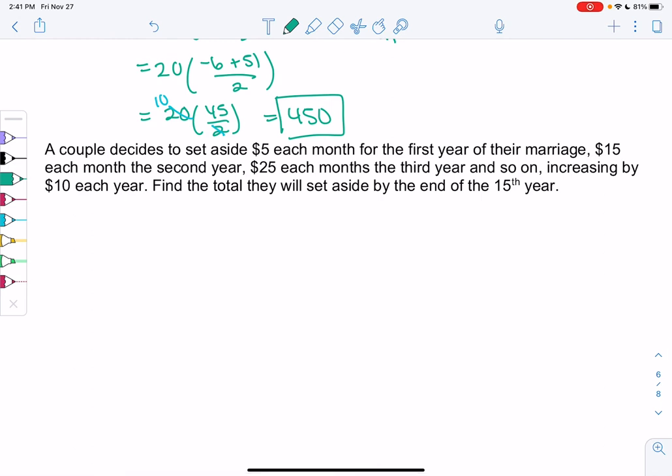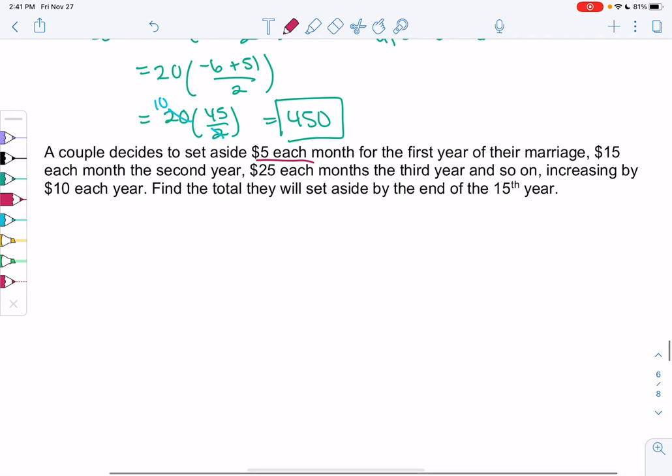A couple decides to set aside $5 every month for the first year of their marriage. And then in their second year, they're going to set aside $15 every month. In their third year, $25 every month. And then they're going to increase these amounts by $10 every year. So let's find the total set aside by the 15th year.